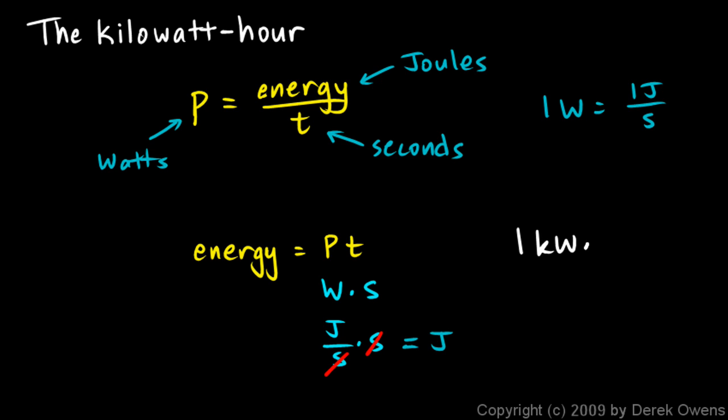If you have one kilowatt times one hour, well the unit there is a kilowatt hour. And that's written with the lowercase k capital W lowercase h. And a kilowatt hour is exactly this, a kilowatt times an hour.